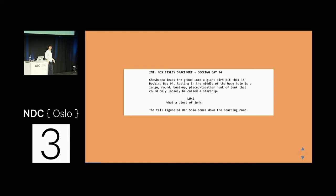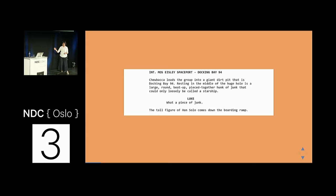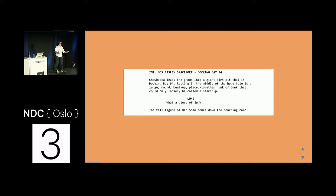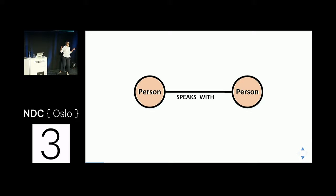This is an example of a script from Episode 4, the original Star Wars. The great thing about this is that they have a very standard type of format. You can see there is a scene title that always starts with INT or EXT, meaning interior or exterior. Then there is a description of the scene, and a name of people speaking and what they are saying. Because we are programmers, we know this is actually quite easy to parse.